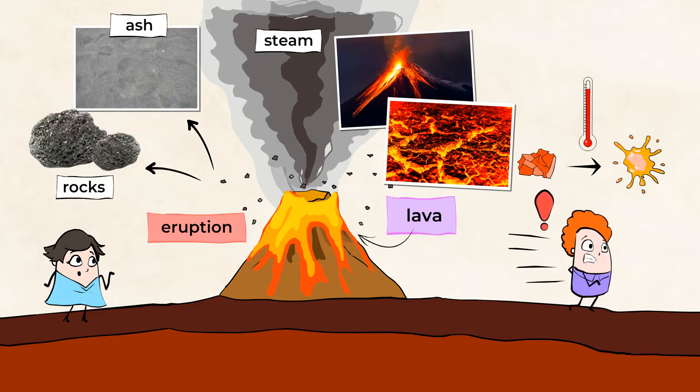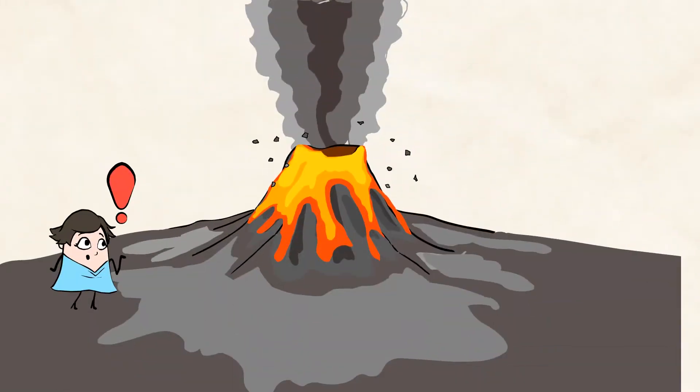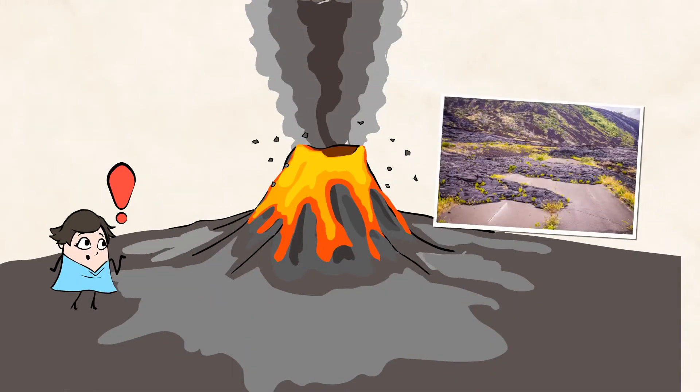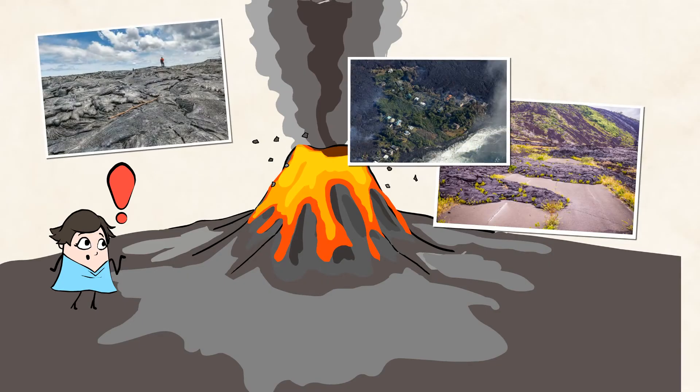Don't get too close! This volcano and its lava can cause a lot of destruction to the land around it. It can damage plants, roads, buildings, and homes, and even hurt humans.